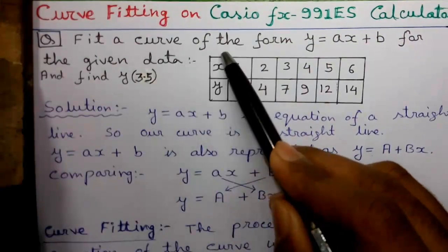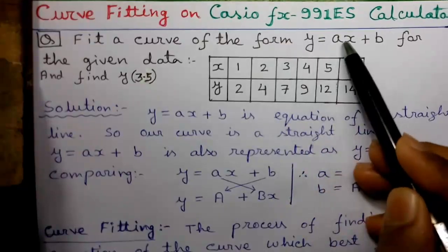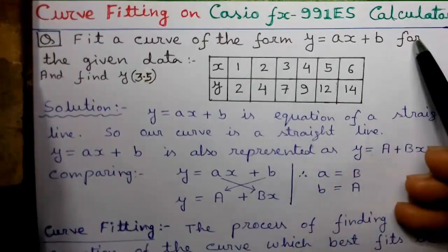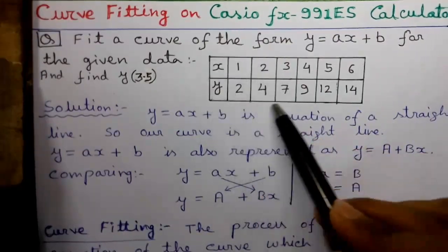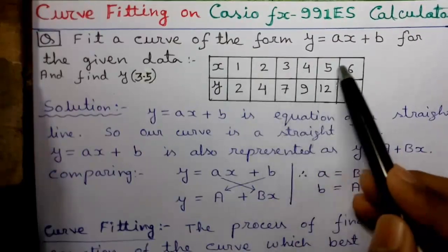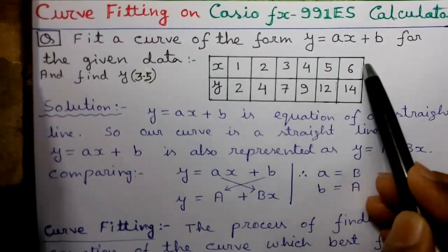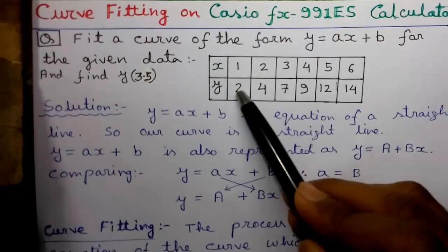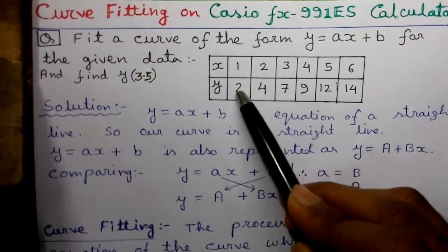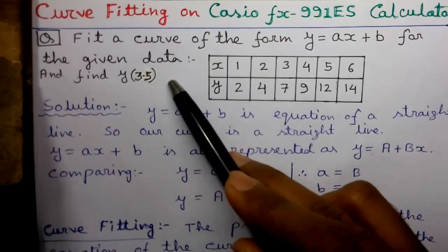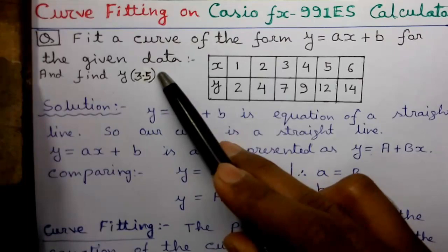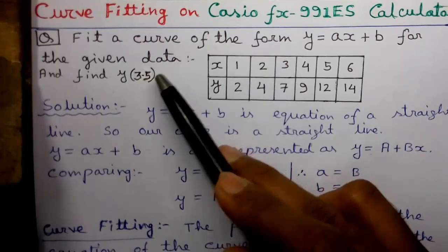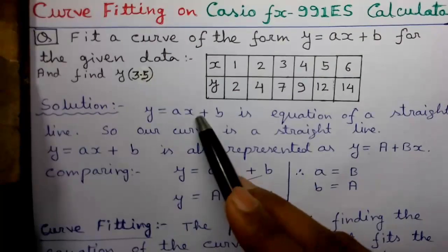Our question is: fit a curve of the form Y = AX + B for the given data set, where the values of X and the corresponding values of Y are given. Also find out Y of 3.5, that means find out the value of Y for X equals to 3.5. Let's proceed to the solution.